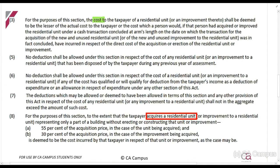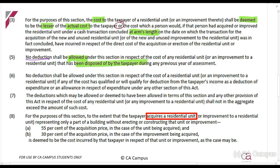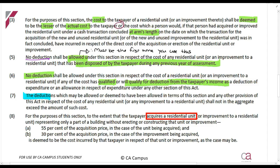For the purpose of this section, the cost to the taxpayer shall be deemed to be the lesser of the actual cost or the arm's length cost that would have been paid — so lesser of cost or market value. No deduction shall be allowed if the unit has been disposed of by the taxpayer during a previous year of assessment — it must be the first time you use this. Also, you can't claim a cost more than once, and the deductions allowed shall not in aggregate exceed the amount of such cost.